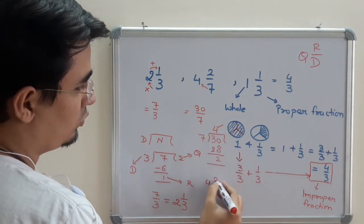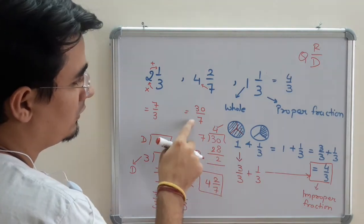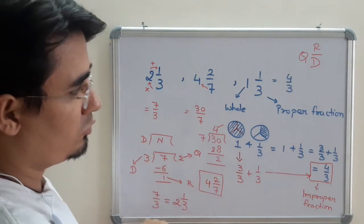Remainder is 2 upon 7. So this is the mixed fraction for this improper fraction. Multiple types of questions can come.